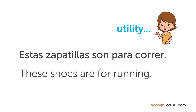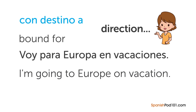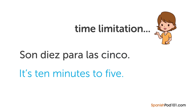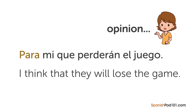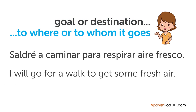Para is used for utility — 'estas zapatillas son para correr' meaning 'these shoes are for running'; direction — 'Voy para Europa en vacaciones' meaning 'I'm going to Europe on vacation'; time limitation — 'Son diez para las cinco' meaning 'It's ten minutes to five'; opinion — 'Para mí, que perderán el juego' meaning 'I think they will lose the game'; and goal or destination — 'Saldré a caminar para respirar aire fresco' meaning 'I will go for a walk to get some fresh air.'